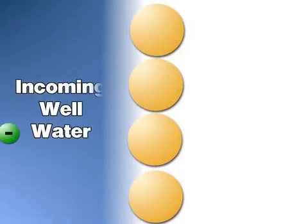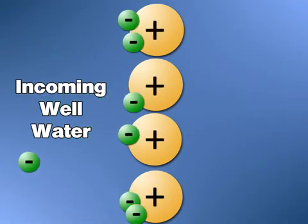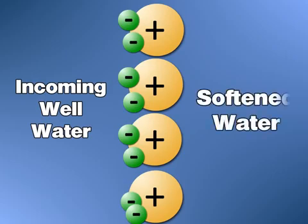As well water flows through the resin bed, the negatively charged hardness molecules are magnetically attracted to bond to the positively charged resin. This process removes the hardness from the well water, creating softened water.